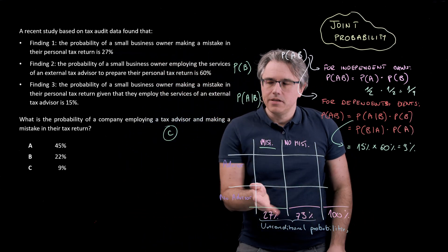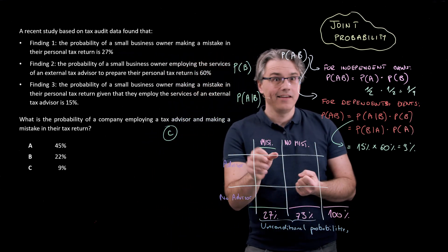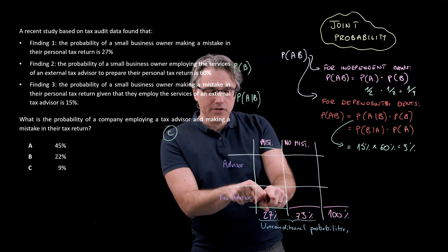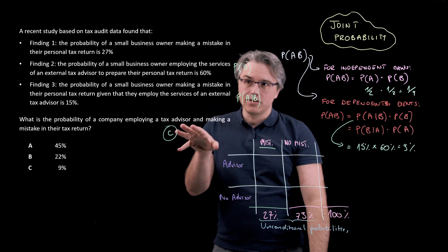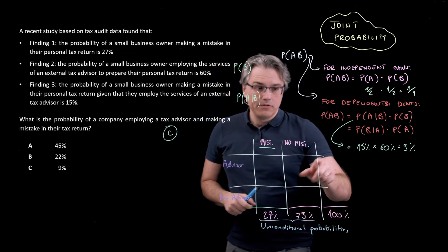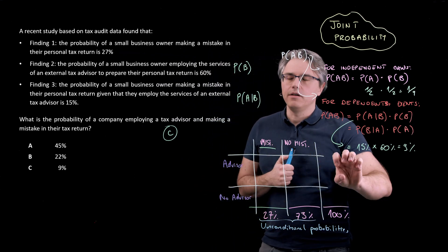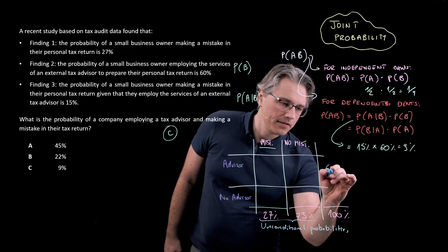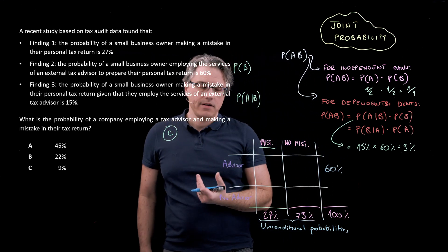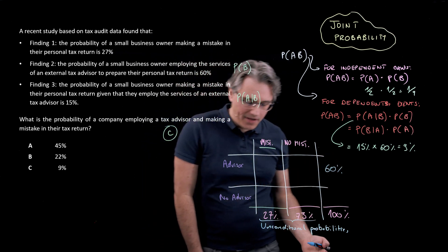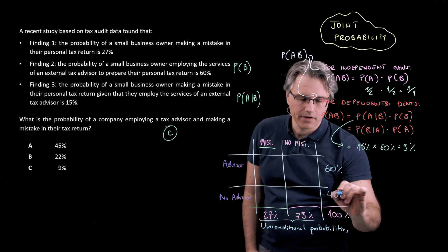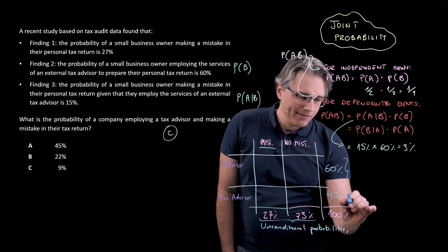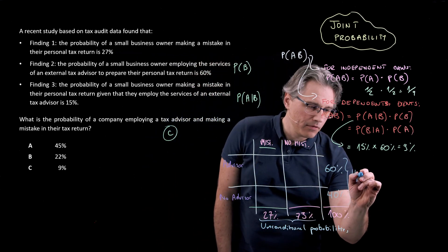From finding number two, 60% of companies employ a tax advisor, so the row total for 'advisor' is 60%. Therefore the row total for 'no advisor' is 40%, giving 100% overall. These side totals are again examples of unconditional or marginal probabilities.